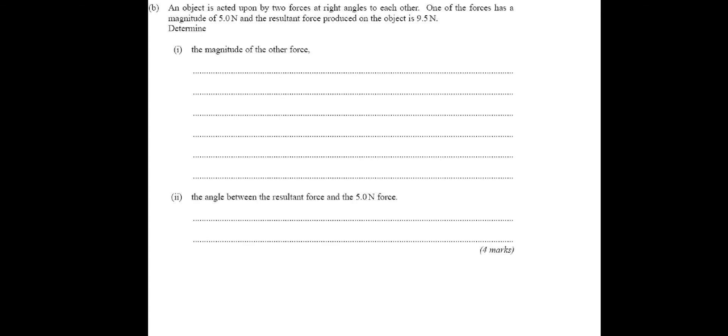So if you'd like to have a go at it, just pause the video. Have a go. And then I'll take you through the answer. So an object is acted upon by two forces at right angles to each other. One of the forces has a magnitude of 5 newtons. And the resultant force produced on the object is 9.5 newtons. Determine the magnitude of the other force. So you've got to be careful with this question. And being careful means looking at the information properly. So an object is acted upon by two forces at right angles to each other. One of the forces is a magnitude of 5 newtons. And the resultant force is 9.5.